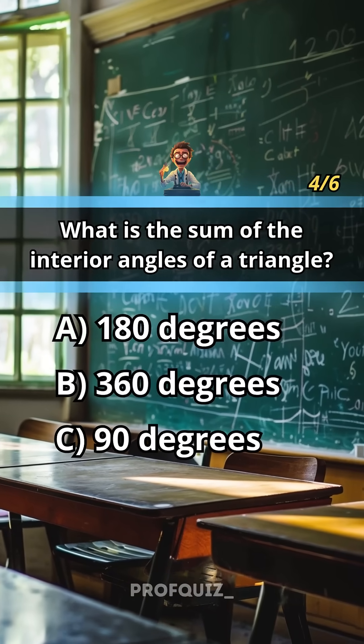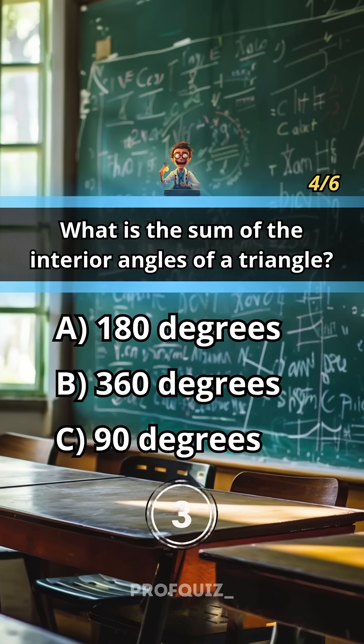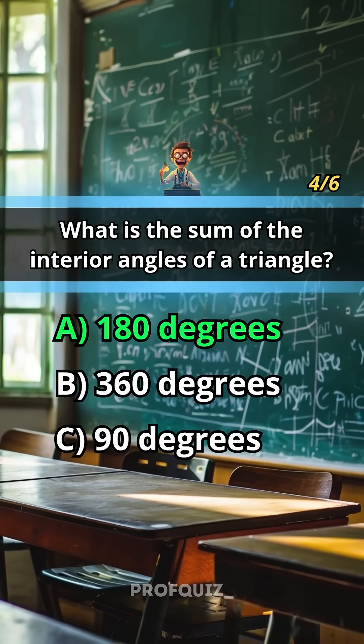What is the sum of the interior angles of a triangle? Answer A, 180 degrees.